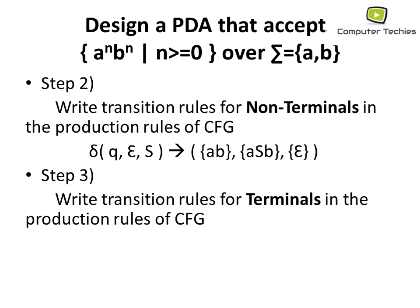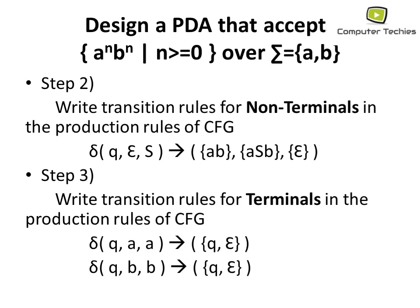Step three: write transition rules for terminals in the production rules of the CFG. We have two terminals, a and b. The transition rules are: if we are on state q with input symbol a and stack top a, then pop out that a from the stack. Similarly, if we have input b and stack top b, then pop out that b from the stack.